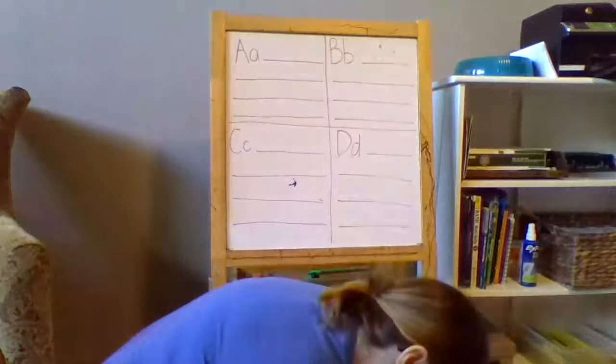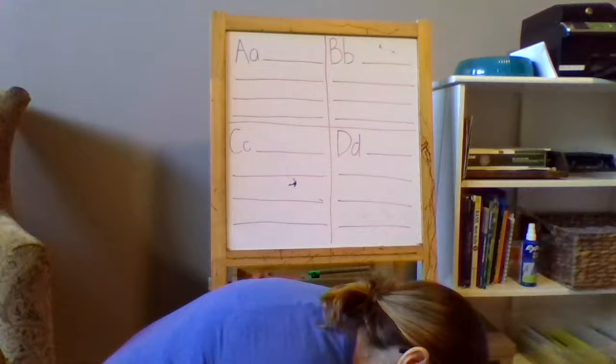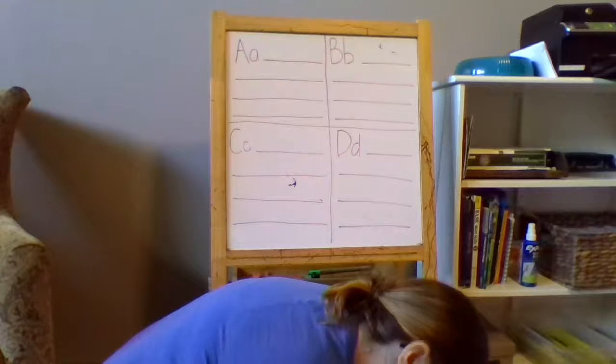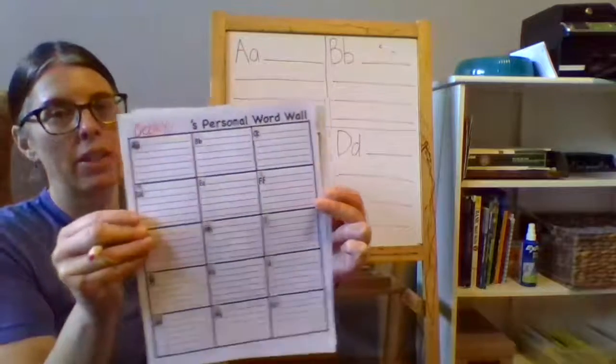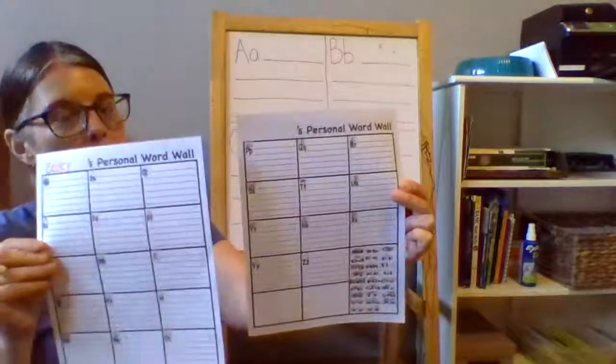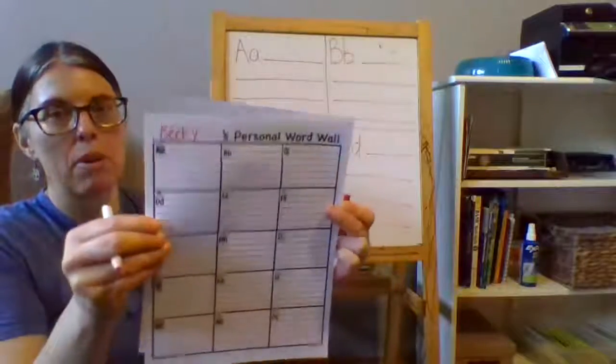I'll do Becky. So put your name there. Becky's personal word wall. And now to get all the letters of the alphabet it's actually two pages. So you'll put your name on both sides.